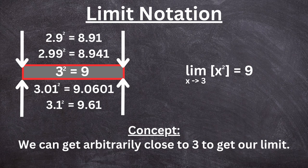You can check this out with a calculator. As you square numbers closer and closer to 9, so 2.9 squared is 8.91, 2.99 squared equals 8.9401, so it gets closer and closer to 9.